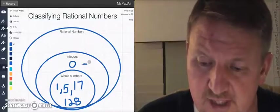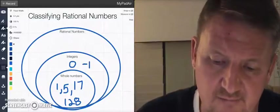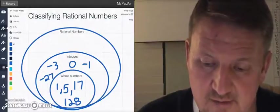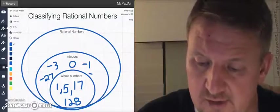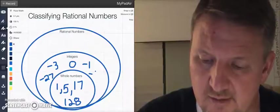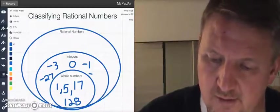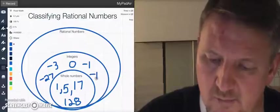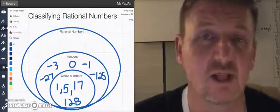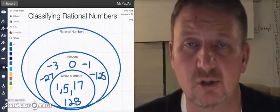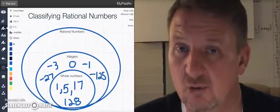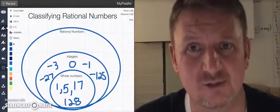But you have negative one, negative three, negative 27, negative 100. And if I can make my one right here, there we go. One hundred twenty five. All these numbers are to the left of zero. And integers also include zero. So your negative numbers are integers, but they also include your whole numbers. That's why the whole number circle is inside the integer circle.